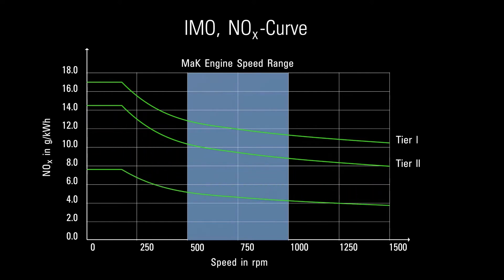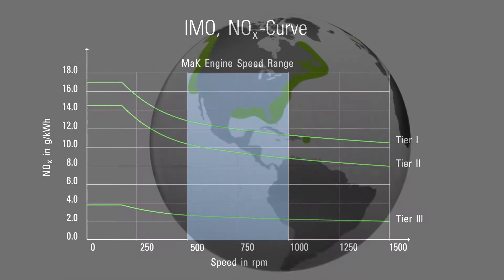Coming from an IMO 2 level, the SCR system must reduce nitrogen oxides by nearly 75% in order to meet IMO 3 values.